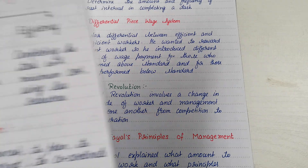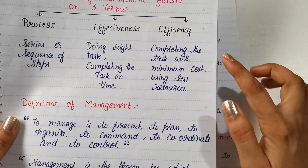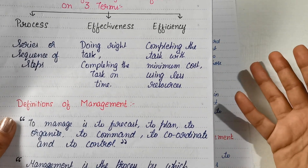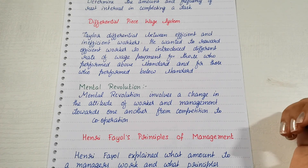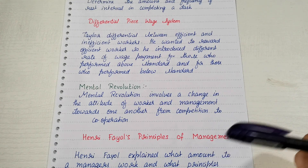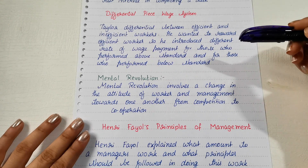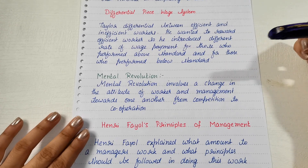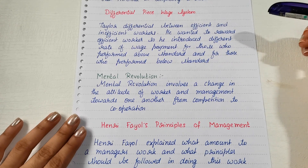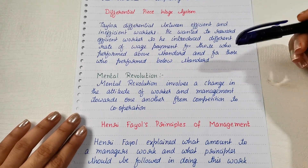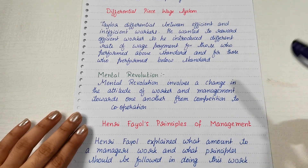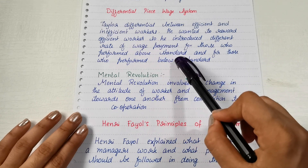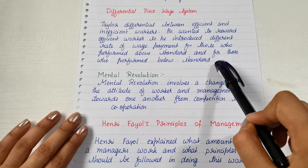Efficiency means completing the task with minimum cost or using less resources like time, money, etc. So Taylor differentiated between efficient and inefficient workers and said that efficient people should be rewarded more so that they get motivated, and inefficient people should be rewarded less so that they understand they need to increase their efficiency. He introduced a differential rate system of wage payment — a higher rate for those who performed above standard and a lower rate for those who performed below standard.